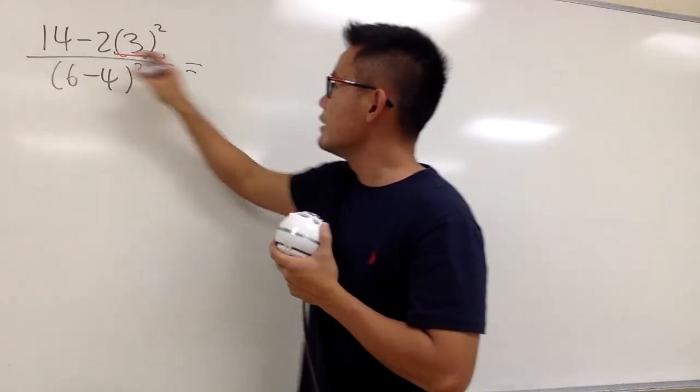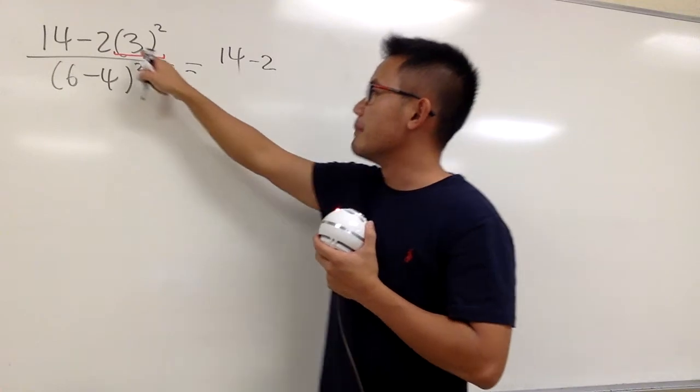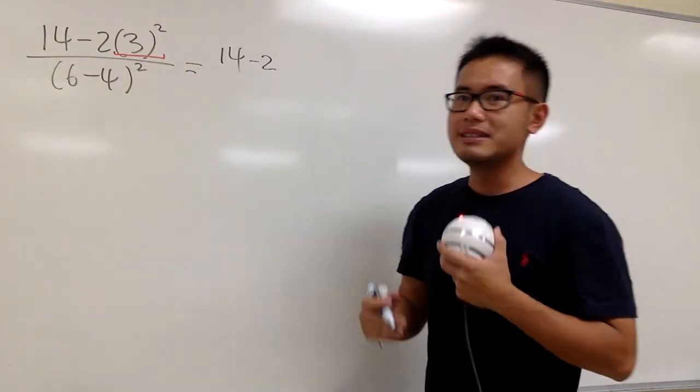So, let me indicate this with the underline like this. 3 squared is equal to 3 times 3, which is going to be 9. So, right here, the 14 stays the same, minus 2 stays the same, but 3 squared, once again, 3 times 3, is 9.